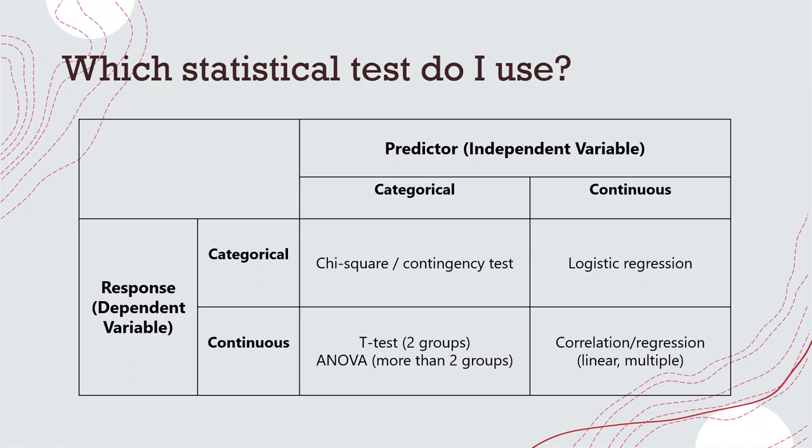If that response variable is continuous — say we're looking at how flipper length differed by island — the test we would use, since we have a categorical predictor (island) and a continuous response (flipper length), would be a t-test if island only has two groups, or an ANOVA if island has more than two groups. Referring back to our lesson plan, where we are looking at how forest section impacts trout weight: our categorical variable, forest section, only has two groups — clear cut and old growth — so in that case we use a t-test. If we are looking at island impact on flipper length, since island has three groups, we would use an ANOVA test.